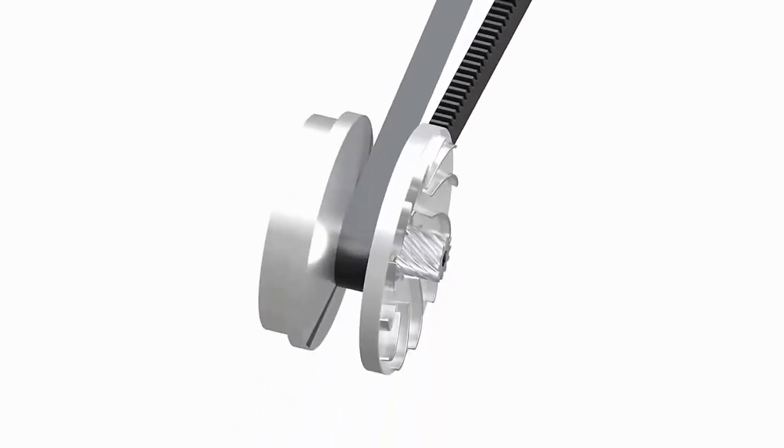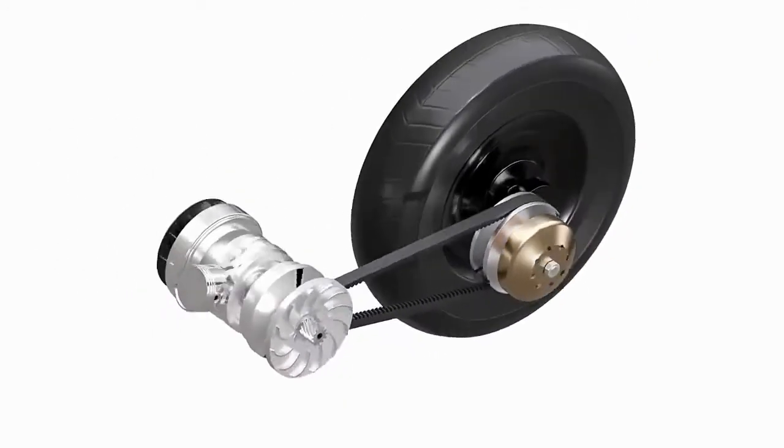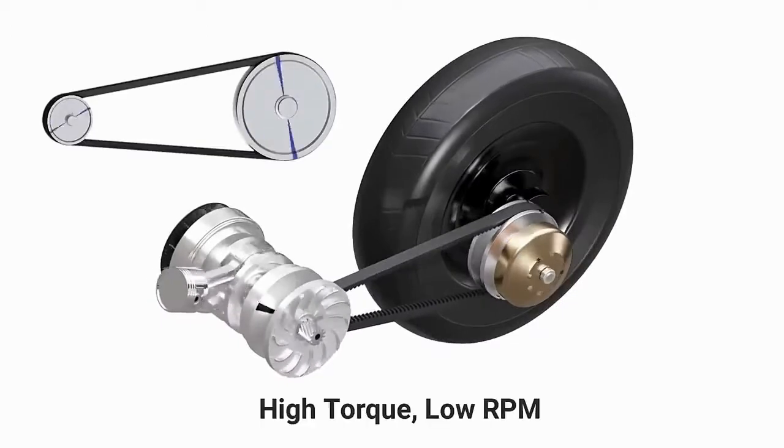In the driver pulley, the axial stiffness of the belt pushes the sliding plate the farthest apart. This causes the driver pulley to have a minimum diameter. This is the condition of high torque, low RPM.